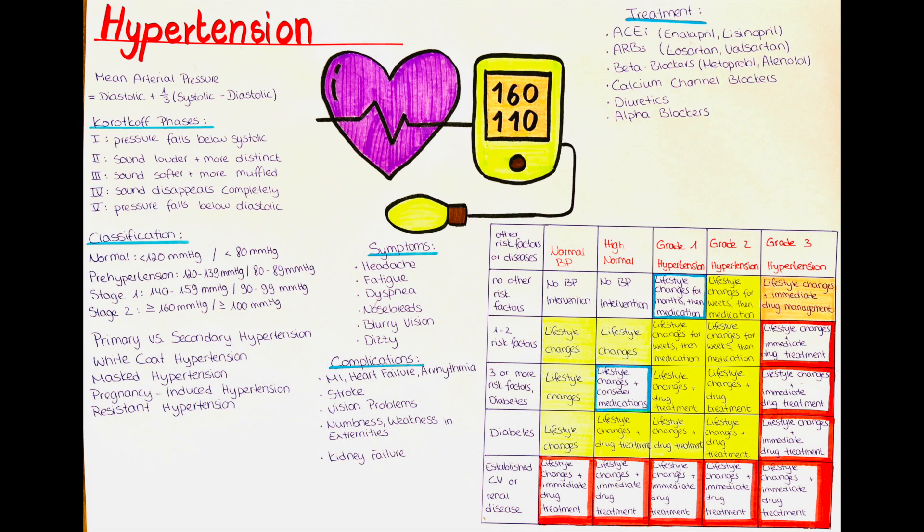Diuretics like thiazide diuretics and loop diuretics help by promoting increased urine production, reducing fluid volume, and subsequently lowering blood pressure. They are used in heart failure and other conditions, but can cause hypokalemia.